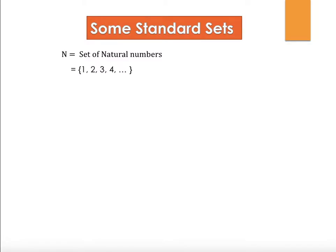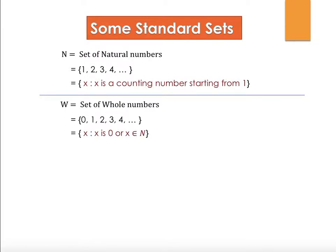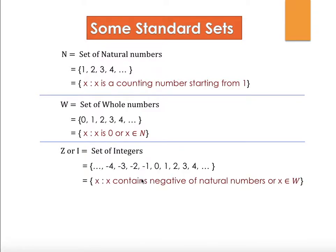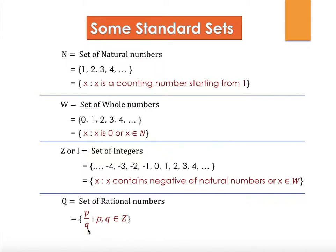Now let's look at some standard sets. N is the set of natural numbers, with the property that x is a counting number. W is the set of whole numbers: x is such that x equals 0 or x belongs to N. Z or I is the set of integers, extending infinitely in either direction — x contains the negative natural numbers or x belongs to W. Q is the set of rational numbers, written as p over q where both p and q are integers. R is the set of real numbers.